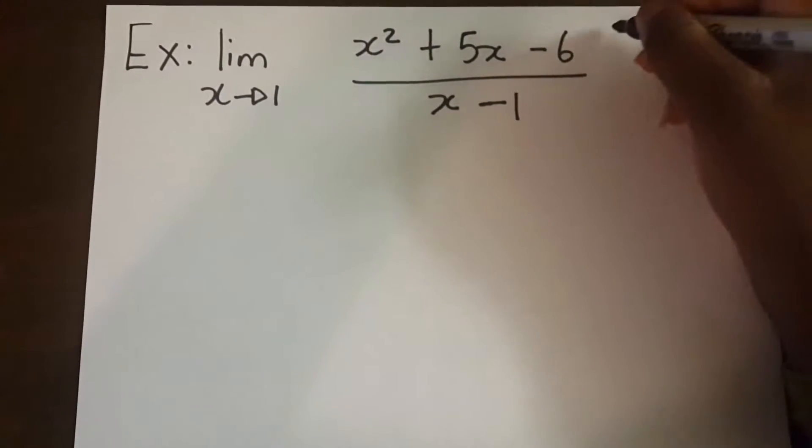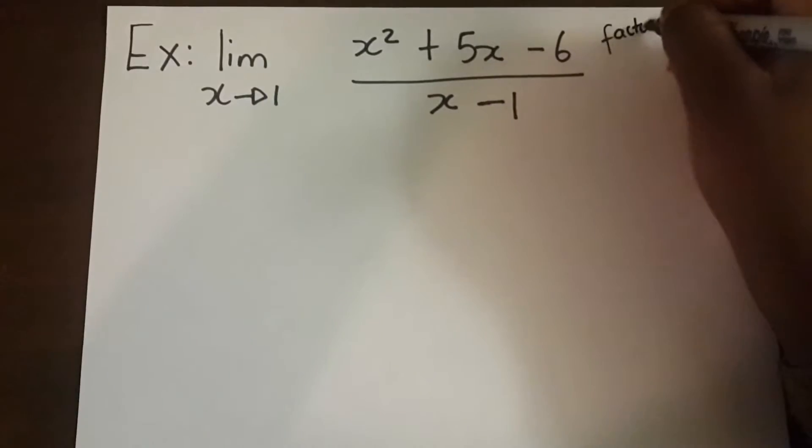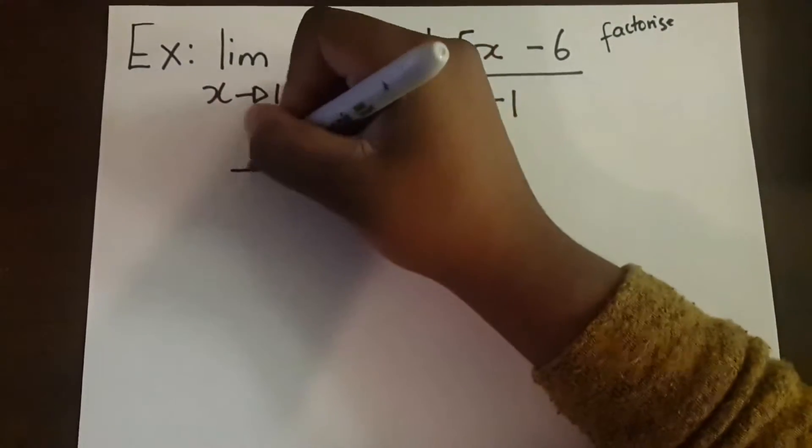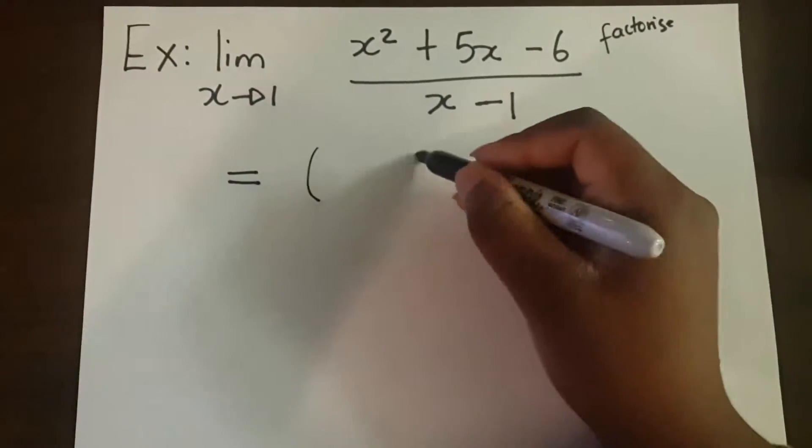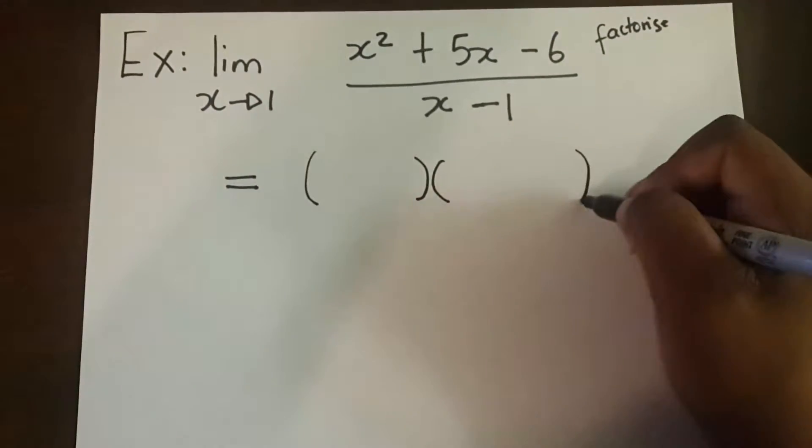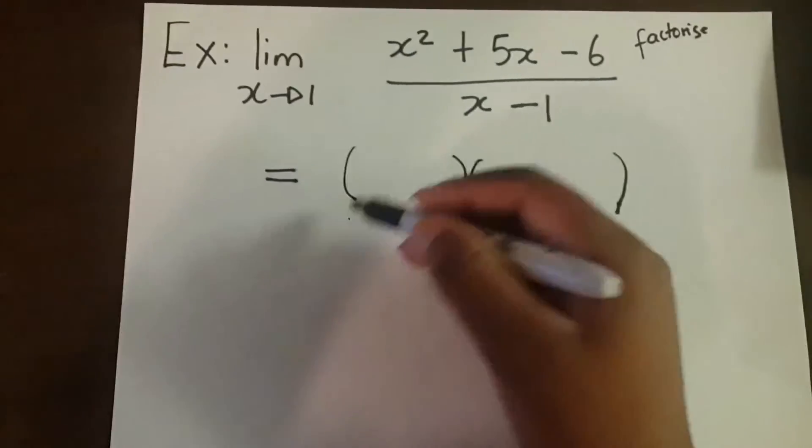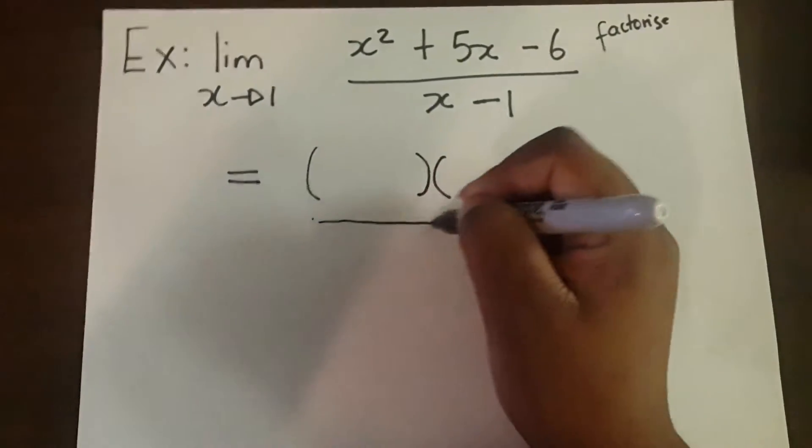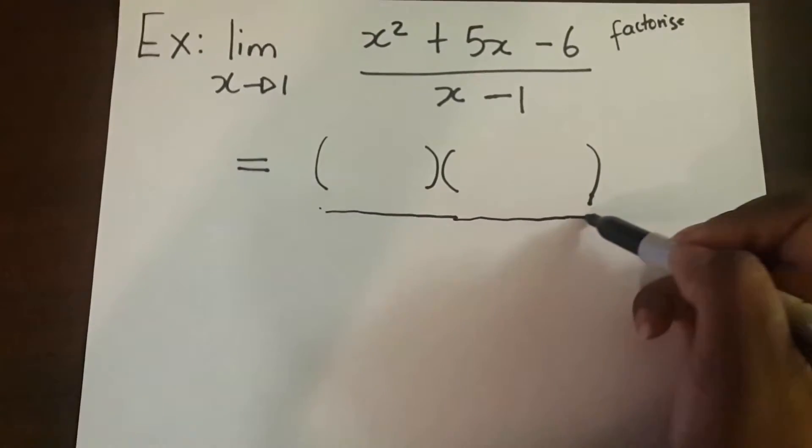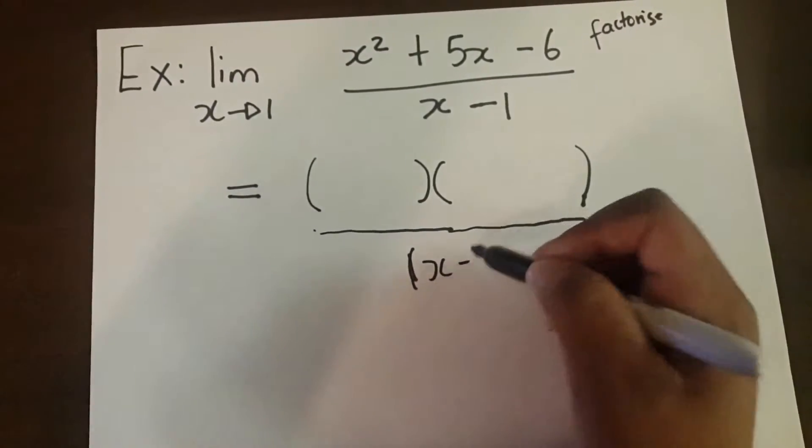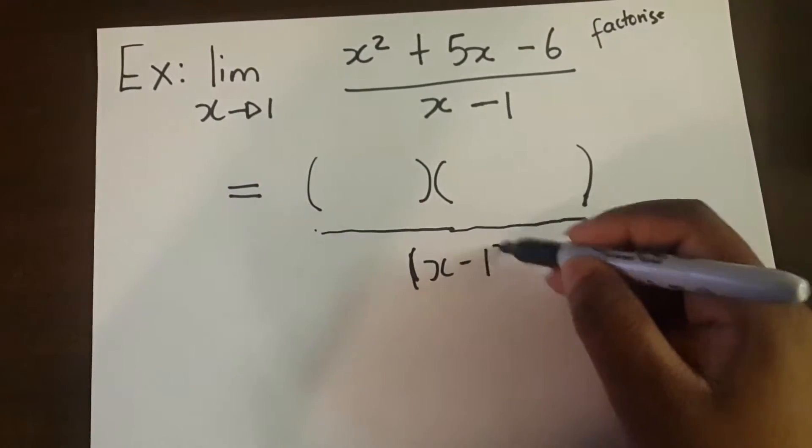So that should hint you that you're supposed to factorize this one. So you factorize the top all over x minus 1.